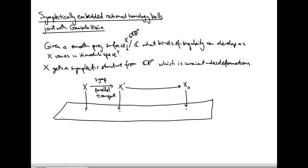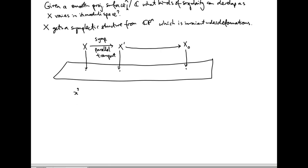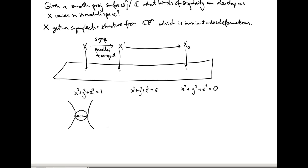As an example: let X be x² + y² + z² = 1, and X₀ be x² + y² + z² = 0, with x² + y² + z² = ε in between. The real part of the smooth fiber is a sphere of radius 1. Over here, x² + y² + z² = 0 is a nodal variety with a node at the origin. As you parallel transport from the smooth fiber to the singular fiber, this sphere gets crushed down to a point.